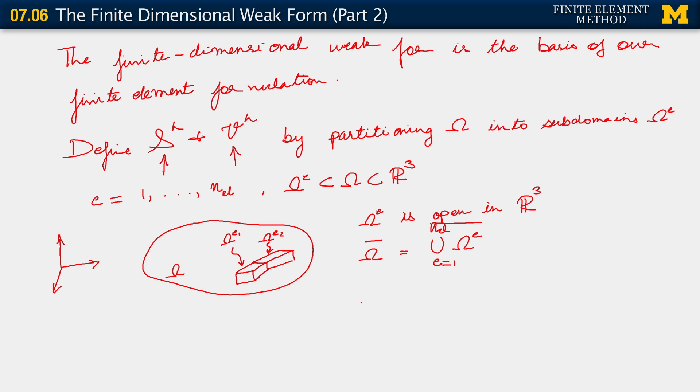We also know that omega e1 intersection omega e2 is the null set. Since each of them is open, their intersection is definitely a null set. We do indeed imply that they are non-overlapping elements, but what happens on their boundary is really a technical thing.